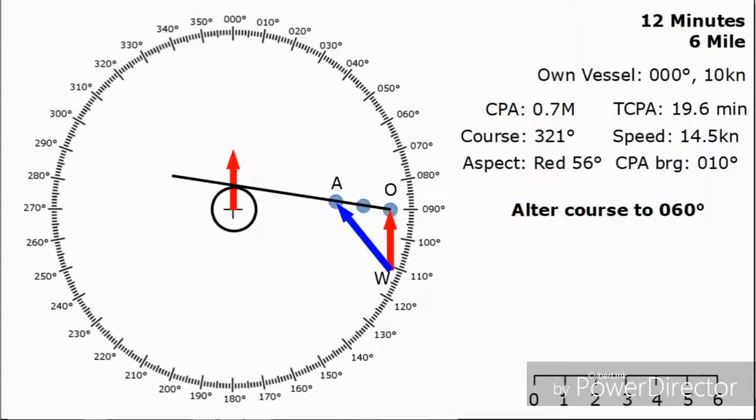I want to know what my CPA is going to be after I alter course to 060. Let's take a look at this to start with. Which of the pieces of information is actually going to change? The CPA is, the TCPA is, but the target vessel's course and speed is not going to change. The aspect of course will change, that's changing all the time because the CPA is not zero. And the CPA bearing, well that is also going to change. Let's just dim out the bits that are going to change. We can see the only thing that will remain the same is the WA vector, which contains the information of the target vessel's course and speed.